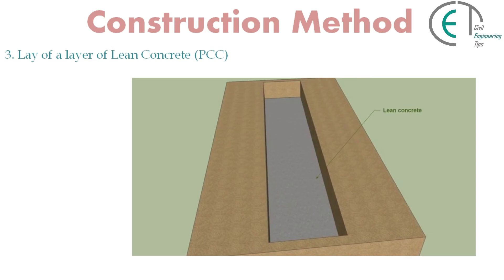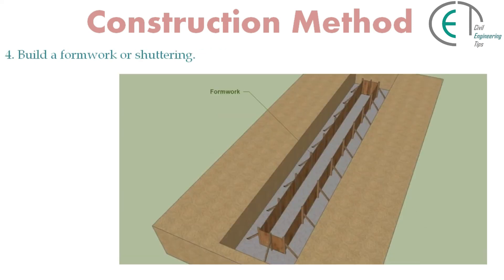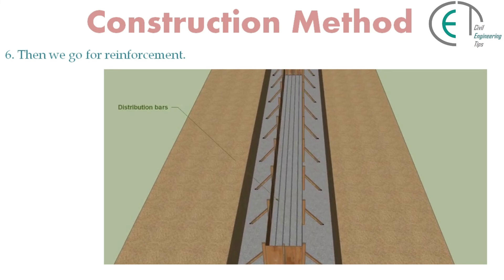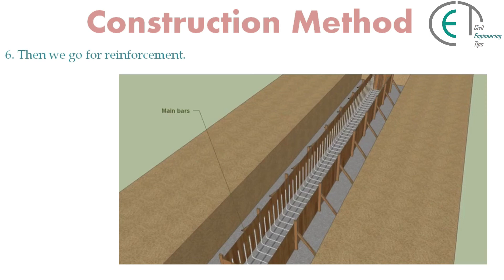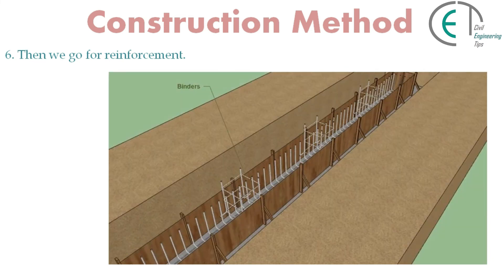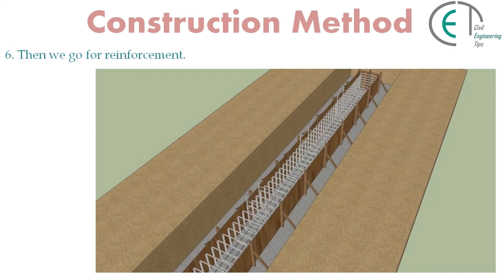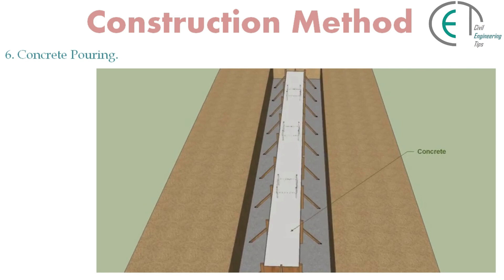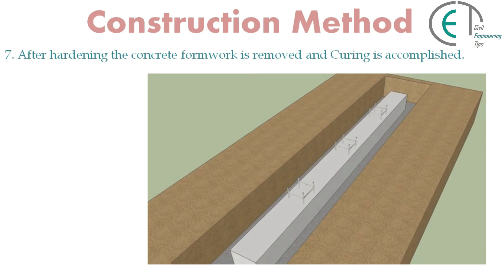The next step is to lay a layer of lean concrete, or PCC — Plain Cement Concrete. Now it's time to set the formwork or shuttering. After that, we place spacer blocks and proceed to the reinforcement. When the reinforcement is complete, we pour concrete inside the formwork. After 24 hours, or after the concrete has hardened, the formwork is removed and curing is accomplished.